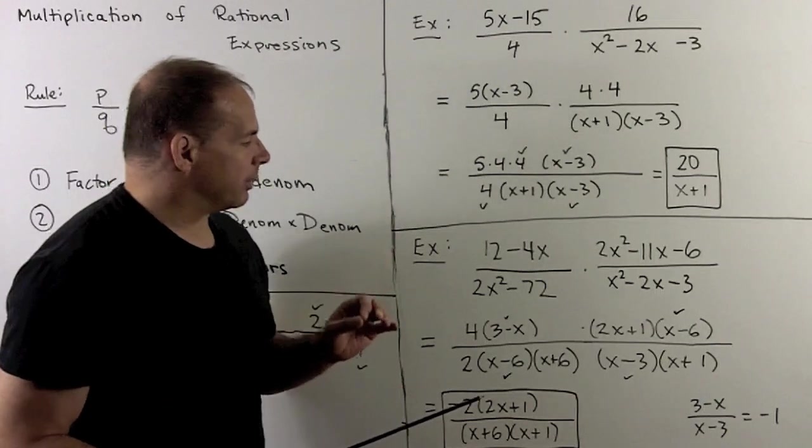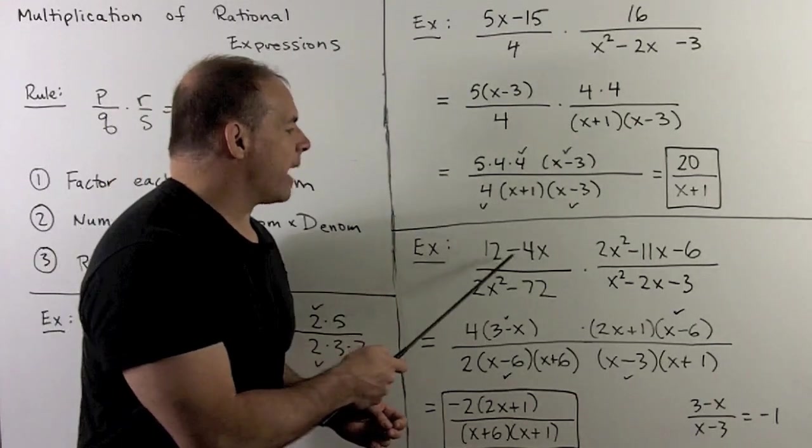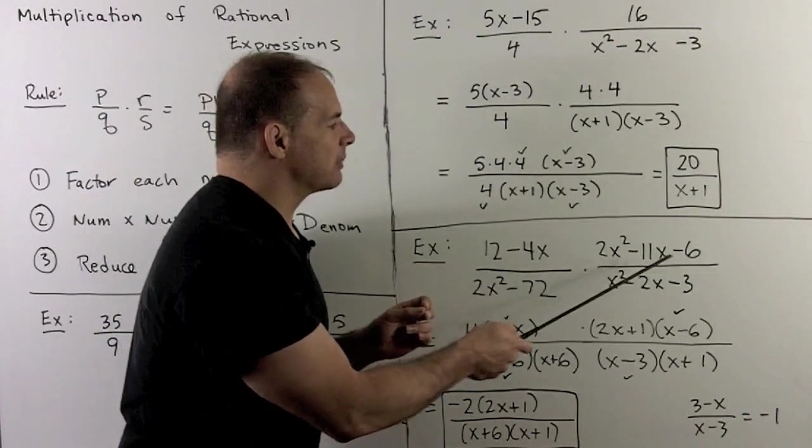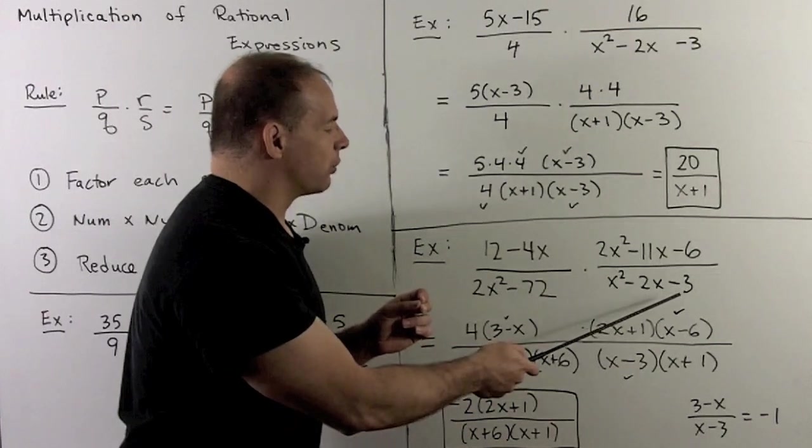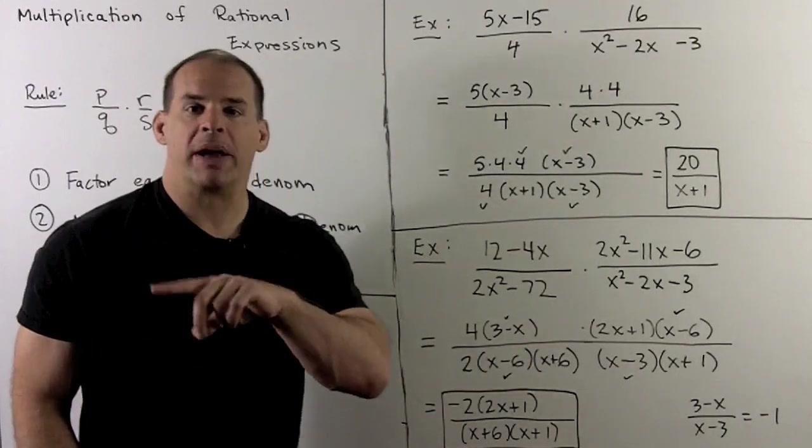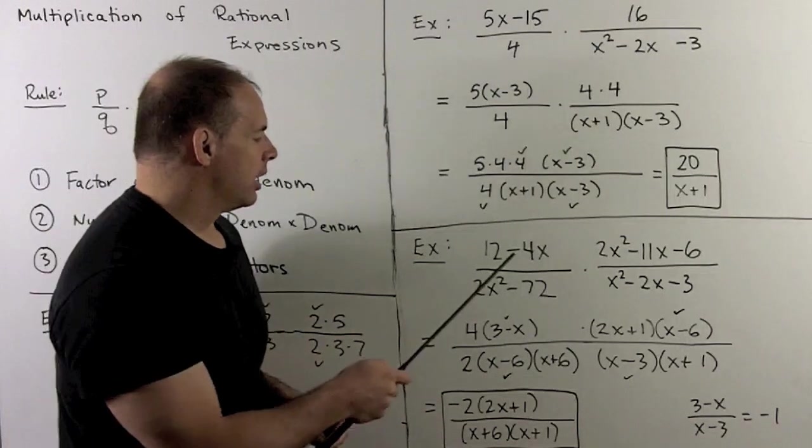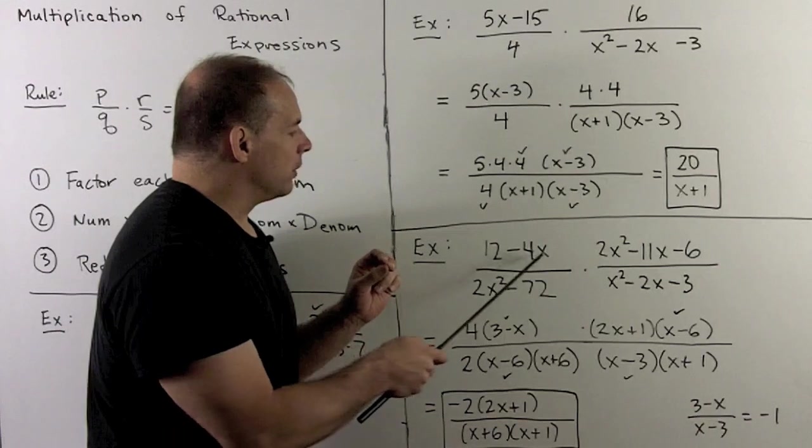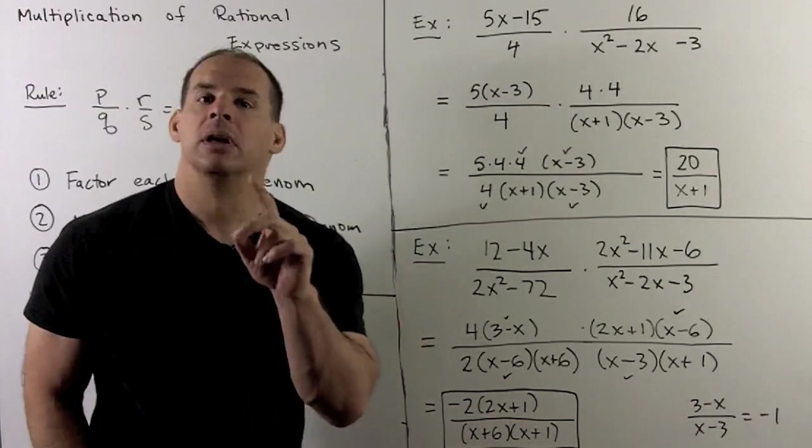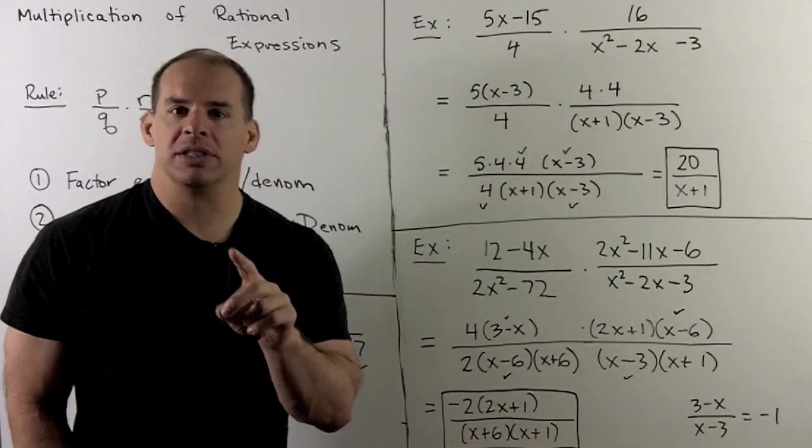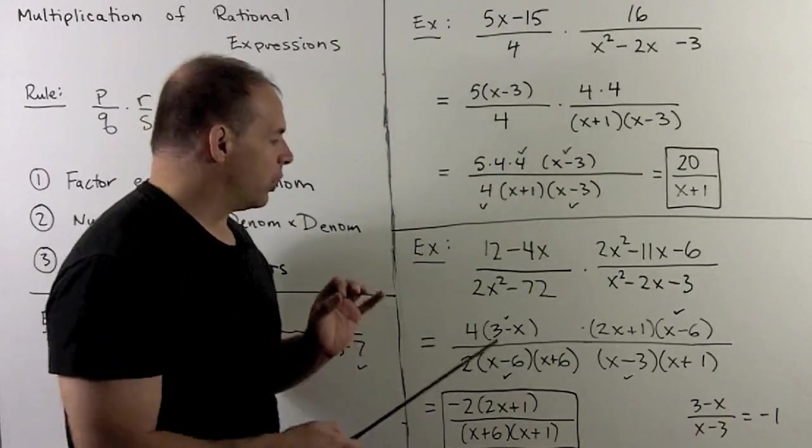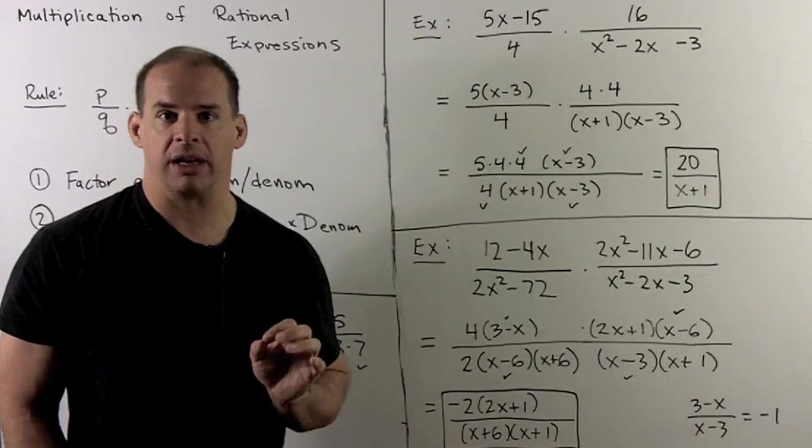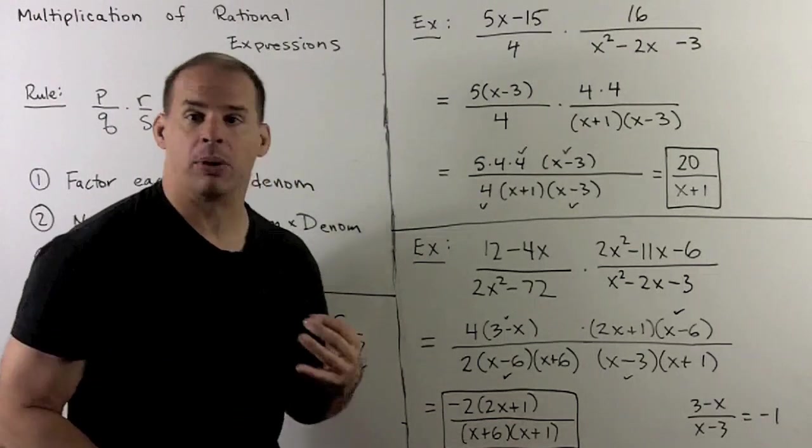Another example, a little bit more complicated. Let's try 12 minus 4x over 2x squared minus 72 times 2x squared minus 11x minus 6 over x squared minus 2x minus 3. Start by completely factoring each term. Now, going through these, in the first one, I know that I can pull a 4 out, which will give me a 3 minus x. You could also pull out a minus 4 to get an x minus 3. I kind of like to put all my terms with lead coefficient without the minus sign. So I would pull a minus 4 out here.